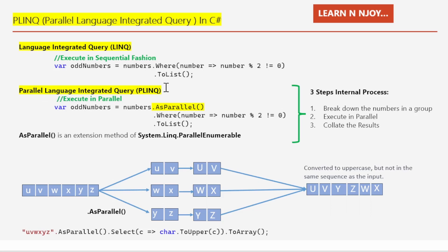Now let's see the Parallel LINQ version. Here I've written `oddNumbers = numbers.AsParallel().Where(number => number % 2 != 0).ToList()`. This performs the same odd number filtering but leverages PLINQ's parallel processing capability, resulting in faster execution on systems with multiple cores. We've simply added the `.AsParallel()` method from `System.Linq.ParallelEnumerable`. It performs a three-step process: first it breaks down the numbers into groups, then executes in parallel, and finally collates the results. All the heavy lifting is done by the framework itself.